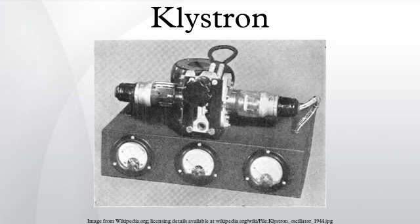After the RF energy has been extracted from the electron beam, the beam is destroyed in a collector. Some klystrons include depressed collectors, which recover energy from the beam before collecting the electrons, increasing efficiency. Multistage depressed collectors enhance the energy recovery by sorting the electrons in energy bins.